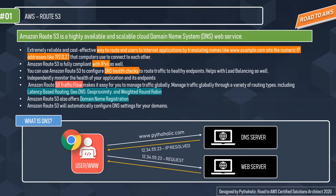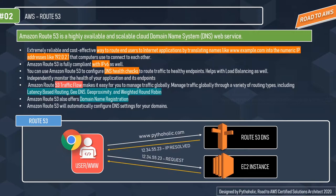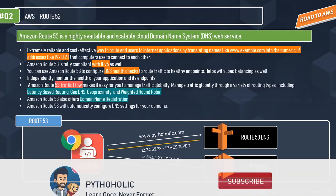Changing the DNS example to Route 53: a user requests to access a site hosted on an EC2 instance, say pytholic.com. The first call goes to Route 53, which translates or resolves pytholic.com to a machine-readable IP address and returns the IP. The client then sends the request to the EC2 instance with the resolved IP and gets the content back. Route 53 maintains a mapping of hostname to IP address.